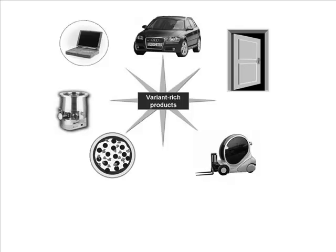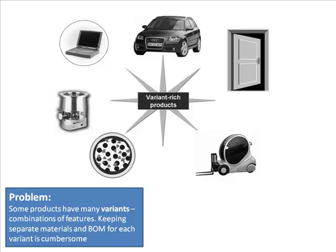The main point is: I've got a car that I can offer in so many different variations - sunroof or not, leather seats or not, seat heaters, etc. Now do you maintain a different BOM for each variation? That's difficult because you can have hundreds of thousands of variations. You also don't want to keep a separate material code for each of the thousand variations. So you keep one material code.